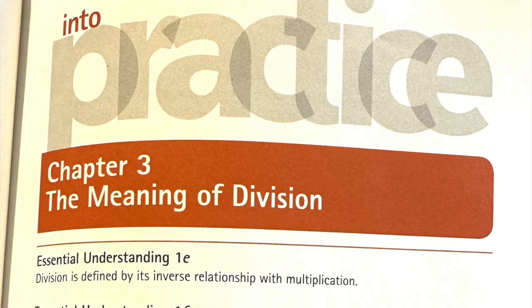On page 55, they list out a couple of essential understandings that relate to division, and Essential Understanding 1E states: division is defined by its inverse relationship with multiplication. I think that's a part that not everyone sees. Division isn't supposed to be seen as a whole separate operation — it is defined by its inverse relationship with multiplication. That's not the only definition of division, but it's one of the essential understandings we need kids to understand.